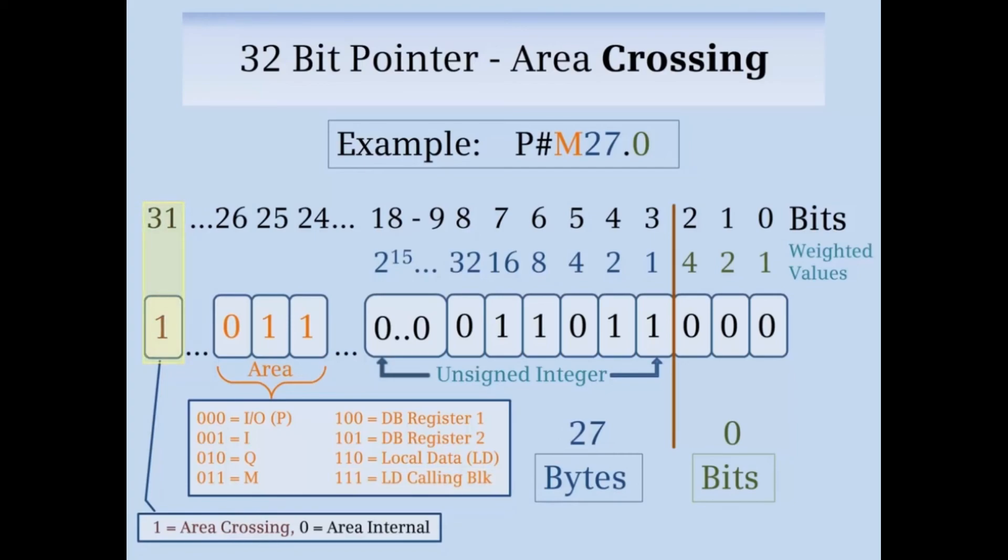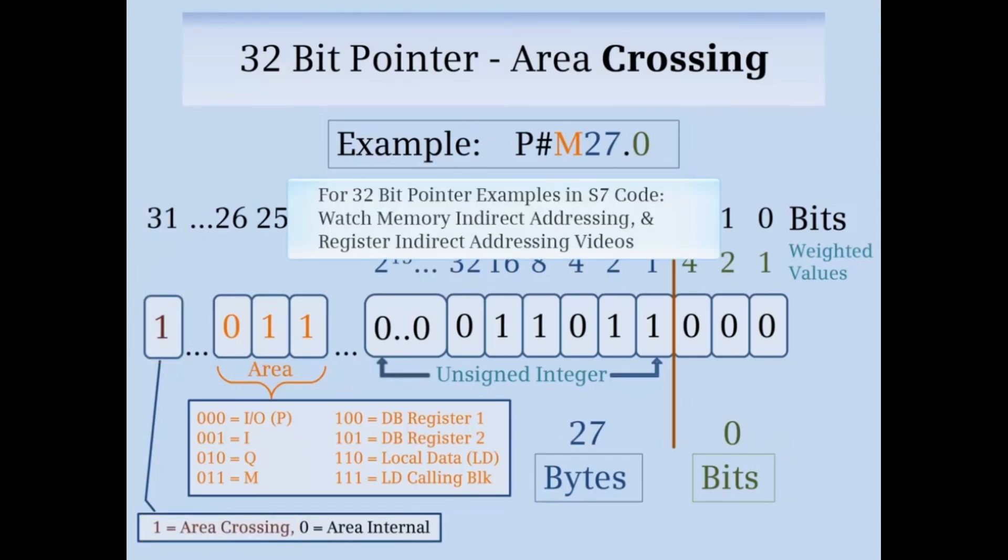Bit 31 will be 1, which means area crossing pointer. You can see examples of area internal and area crossing pointers used in the code by watching the memory indirect addressing and register indirect addressing videos. This concludes the video on 32-bit pointers.